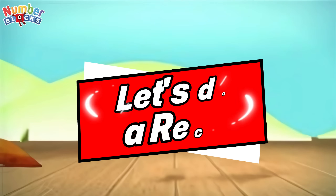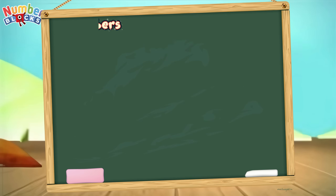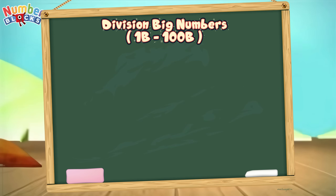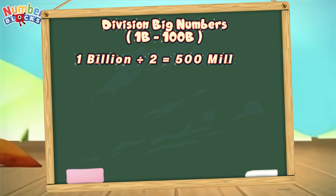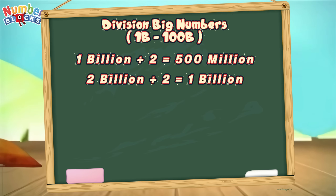Let's do a recap. Division: big numbers, 1 billion to 100 billion. 1 billion divided by 2 is equal to 500 million. 2 billion divided by 2 is equal to 1 billion. 4 billion divided by 2 is equal to 2 billion.